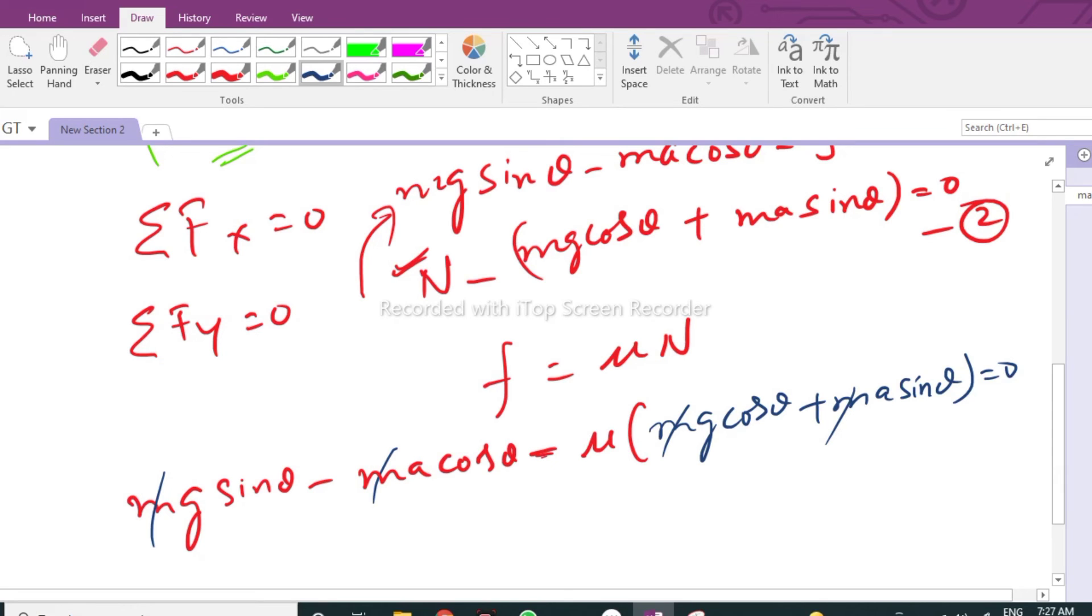You can see here that sine 45—because in the question theta is given as 45 degrees—sine 45 and cosine 45, they are the same. So you can cancel out sine theta and cosine theta everywhere.